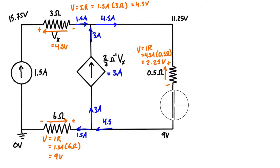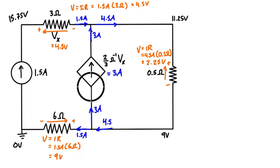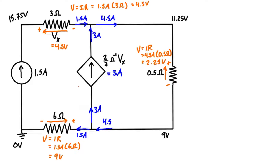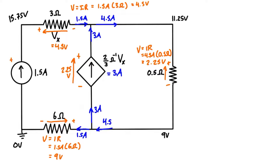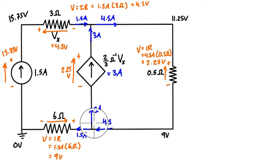Continuing across the top, we jump another 4.5 volts, so the top node is 15.75 volts above ground. We can verify using Kirchhoff's Voltage Law: going around the small loop, we have +2.25 volts and −2.25 volts, confirming the polarity — negative on one side and positive on the other. We can also see that the independent source sits across 15.75 volts with the correct polarity. Now we have all the voltage drops, all node voltages, and KVL and KCL are both satisfied.